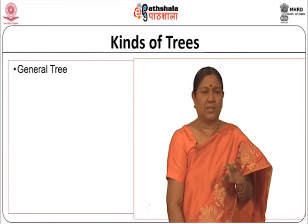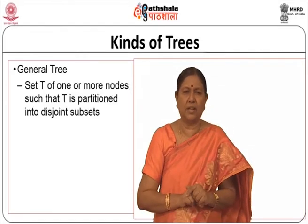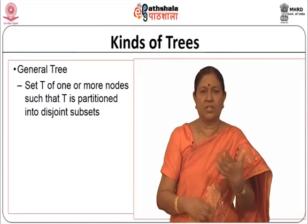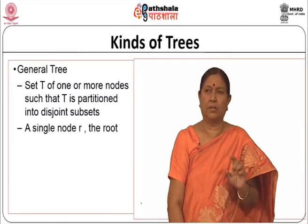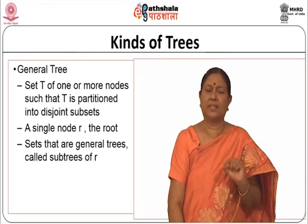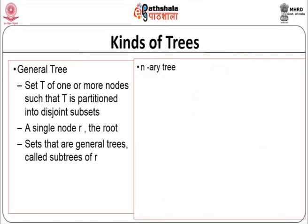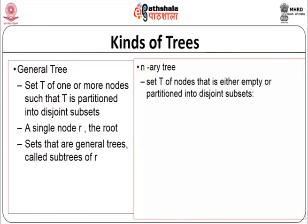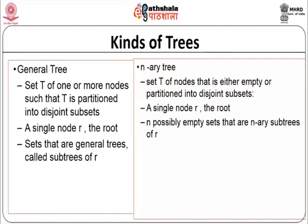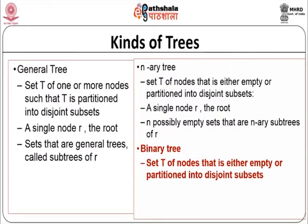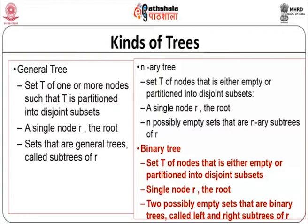Now let us look at the kinds of trees. You have a general tree, which is a set T of one or more nodes such that T is partitioned into disjoint subsets - a single node R as the root, and sets that are general trees as sub-trees of R. An n-ary tree is a set of nodes that is either empty or partitioned into n disjoint subsets - a single node and n possibly empty sets that are n-ary sub-trees of R. A binary tree is a special case where the root has two possibly empty sets called the left and right sub-trees.